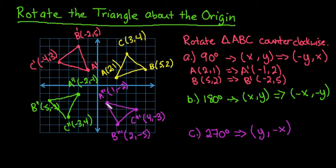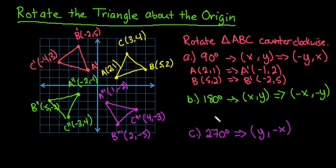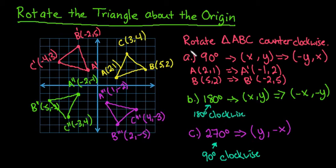So to summarize: to rotate counterclockwise 90 degrees, switch the coordinates and change the sign of your new x coordinate. For 180 degrees, change the signs of both coordinates and keep the same order. For 270 degrees, switch the order and negate the value that becomes your y coordinate, since we land in quadrant 4 with a negative y.